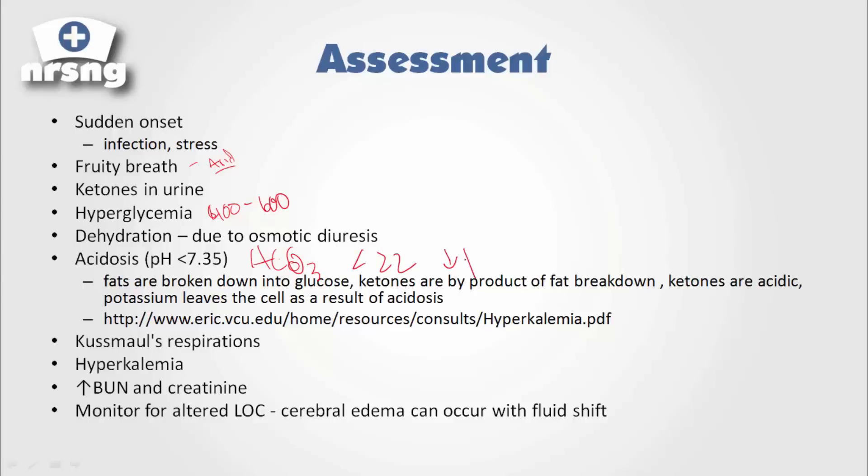We're going to have a decrease in pH and a decrease in bicarb because of this acidosis. The reason acidosis occurs is because these fats are broken down into glucose. These ketones are a byproduct of the fat breakdown. Ketones are very acidic and potassium begins to leave the cell as a result of this acidosis. You're also going to see Kussmaul respirations in your patient and this hyperkalemia is associated with this acidosis. You're also going to see an elevated BUN and creatinine as a result of this osmotic diuresis. As you begin to put out all this urine, you see an elevated creatinine associated with renal failure. You're also going to want to monitor level of consciousness, cerebral edema can occur due to this fluid shift.